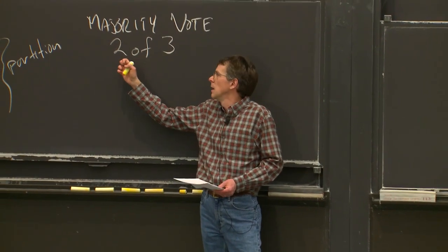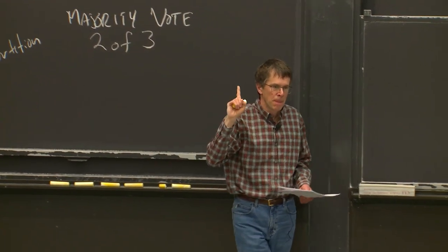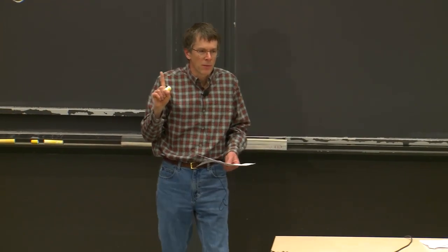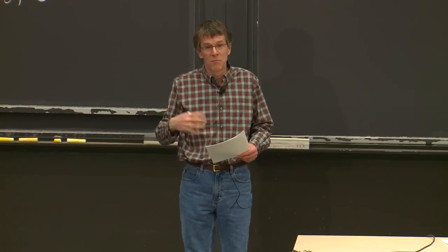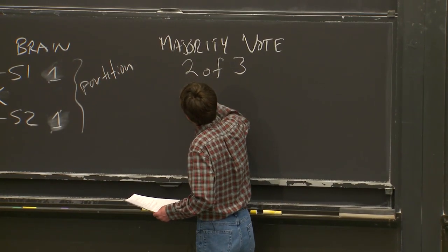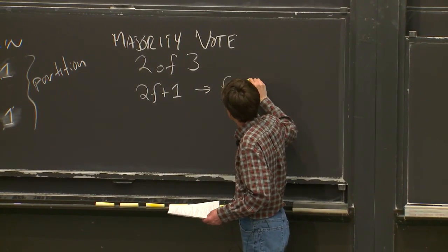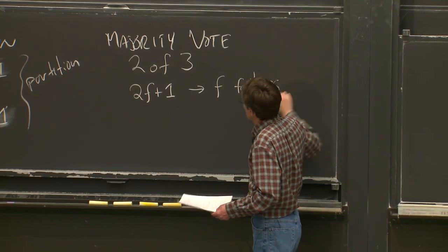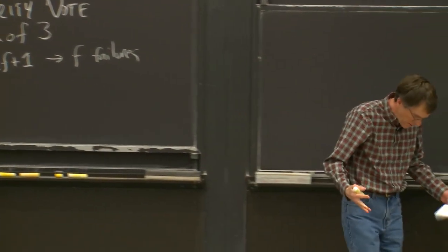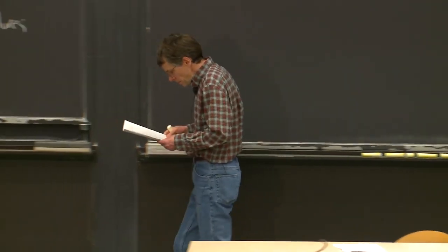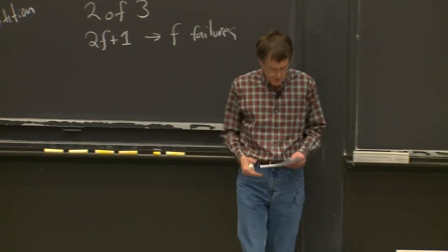In a majority voting system where two out of three are required to make progress, the system can survive the failure of one server. The more general formulation is: if you have 2f+1 servers, you can withstand f failures. In a system with three servers, f equals one, so you can tolerate one failure and still keep going. These are often called quorum systems because the two-out-of-three requirement is sometimes called a quorum.